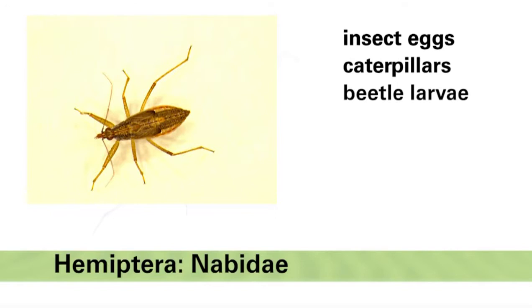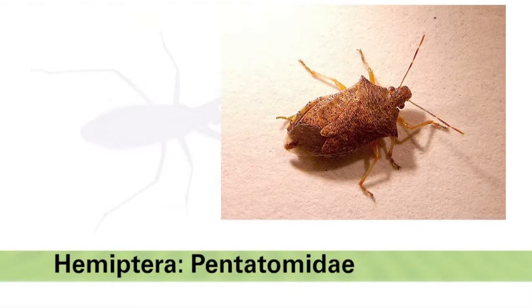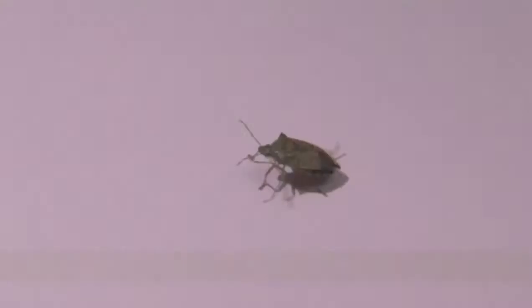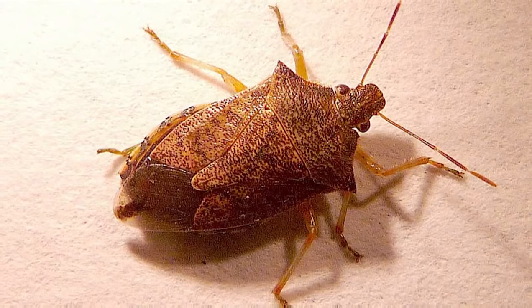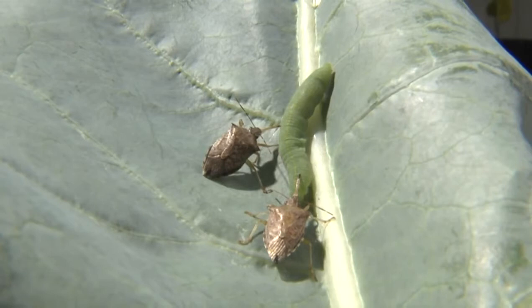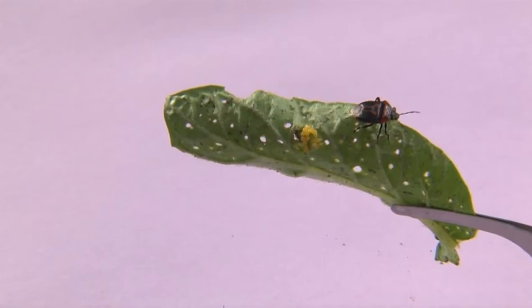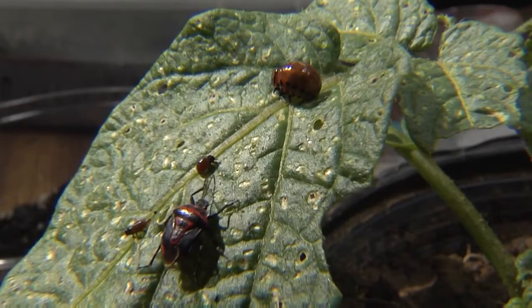The stink bug family Pentatomidae contains many vegetable pests. However, there are also some beneficial predatory stink bug species. Adult predatory stink bugs are shield-shaped. Two predatory stink bugs are found in the Great Lakes region. The spined soldier bug is brown with prominent spines on the edges of the pronotum and a distinctive dark spot on the tips of its membranous wings, and is a half-inch in length. It feeds on a number of vegetable crop pests including cabbage worm. The two-spotted stink bug has a black body outlined with yellow and red markings, is a half-inch in length, and feeds on all life stages of the Colorado potato beetle.